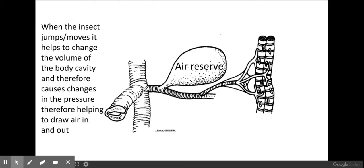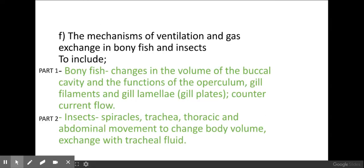But also the insects can help to move air around the body due to jumping or movement they would naturally do in a normal day. And through moving, it helps to change the volume of the body cavity and therefore causes changes in the pressure, helping air to be drawn in and out through these spiracles. So that's how gas exchange occurs in insects.